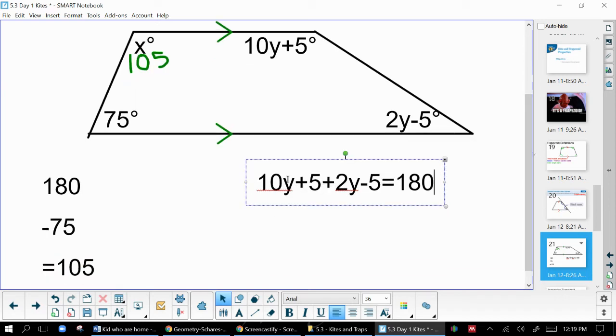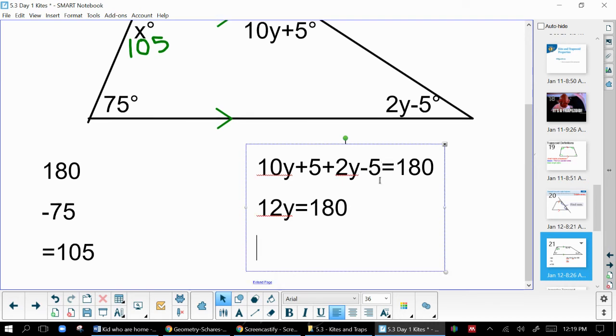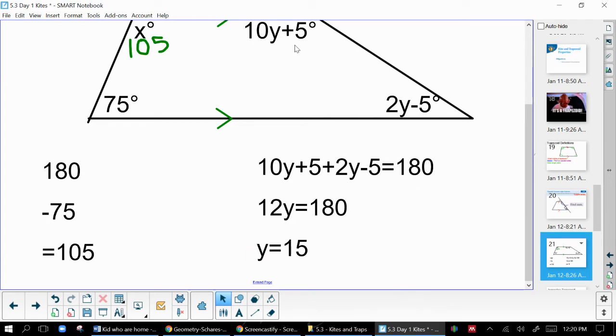Now I can combine my terms. 10y and 2y makes 12y. Plus 5 and minus 5, well, that's just 0, equals 180. And now I just have to divide by 12. 180 divided by 12 on both sides. Oh, it does. Never mind. Y equals 15. So that's using the consecutive angles conjecture.